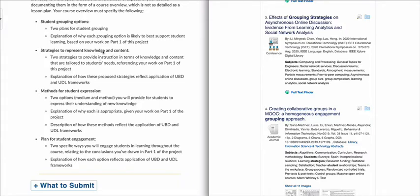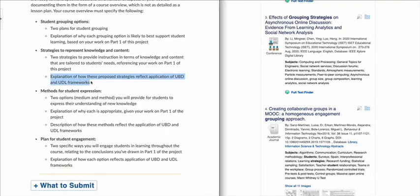When you get into representing knowledge and content, student expression, and student engagement, you have to provide examples. On top of that, you want to explain how these proposed strategies reflect application of Universal Design for Learning and Understanding by Design. So how do UBD and UDL tie into this? You have to add those components, tie them to the student data, and link them to both the UBD and UDL frameworks. Each of the four sections needs citations to credible resources or references.